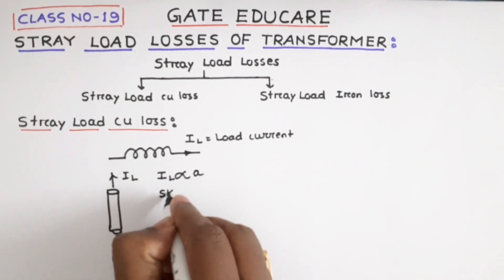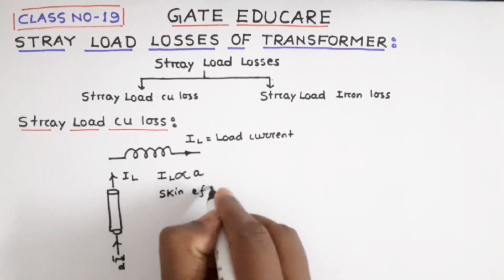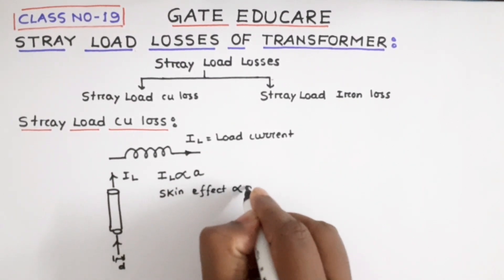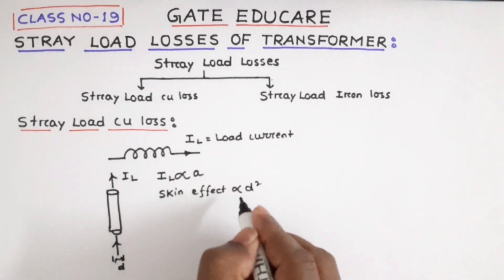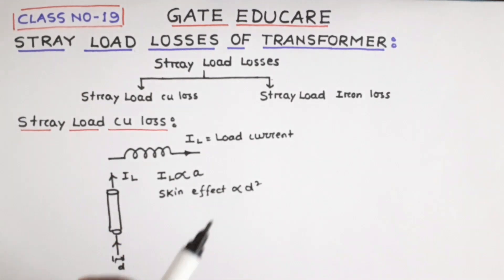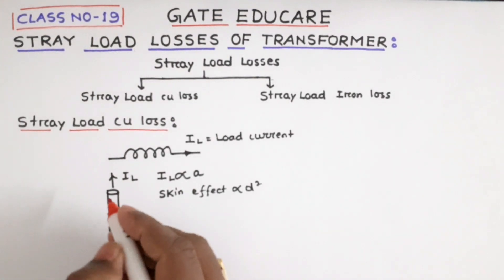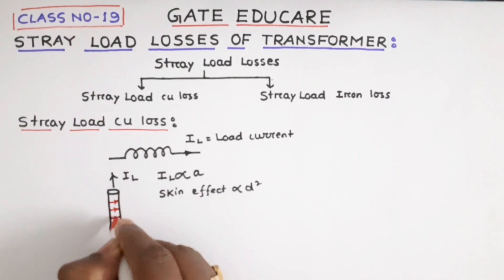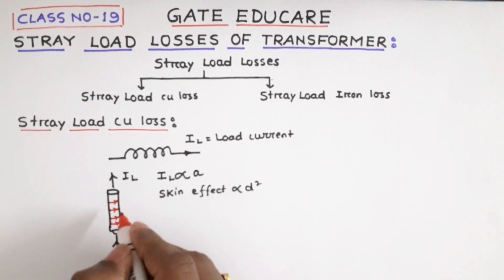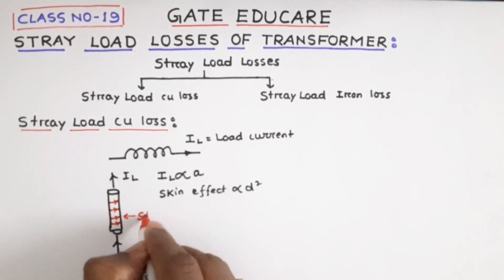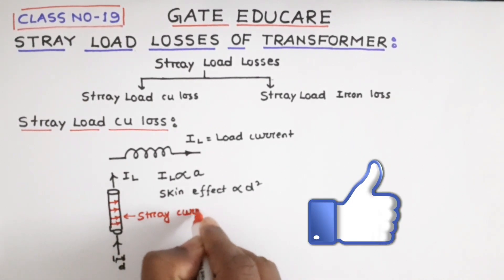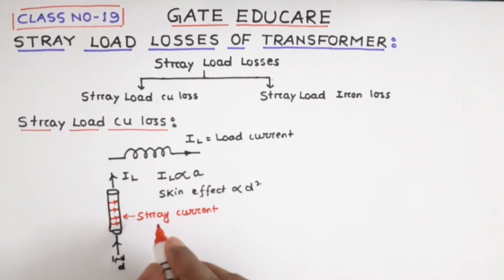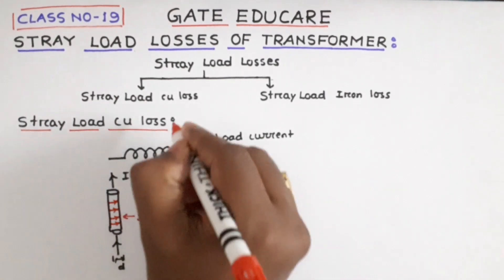Now, the current IL is proportional to the cross-sectional area A of the conductor. The skin effect is proportional to d-squared — that is, diameter squared. The higher the diameter, the higher the skin effect. Due to this skin effect, the current will circulate to the surface area of the conductor throughout its surface. This current is called a stray current.